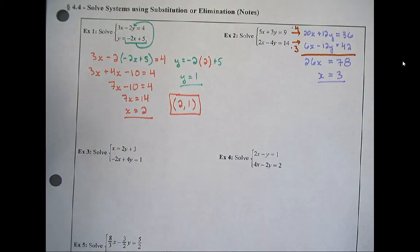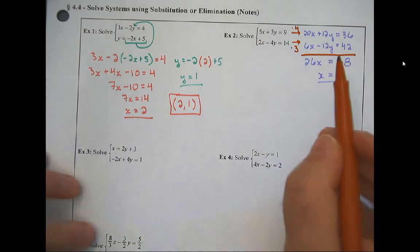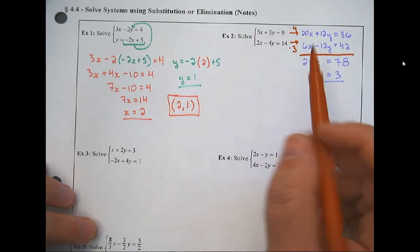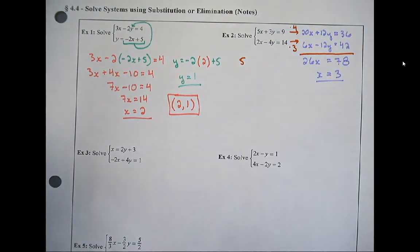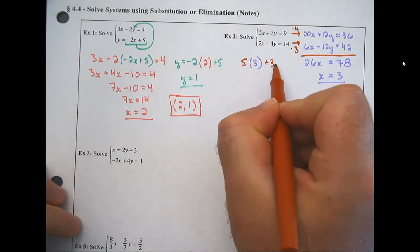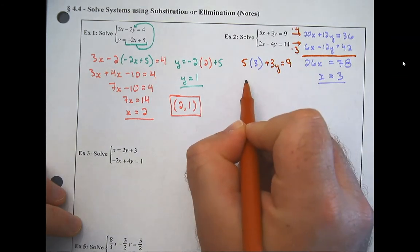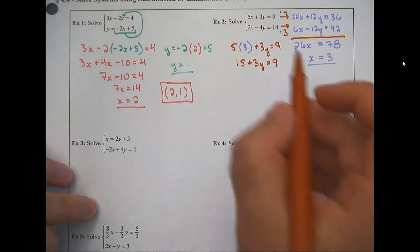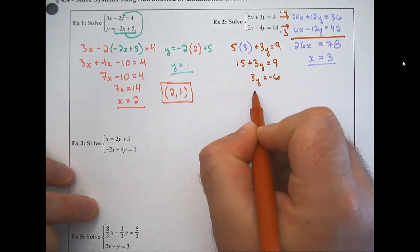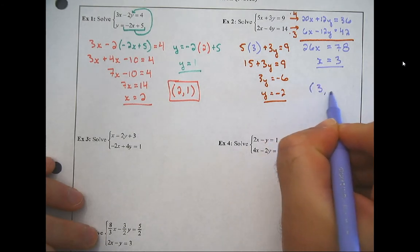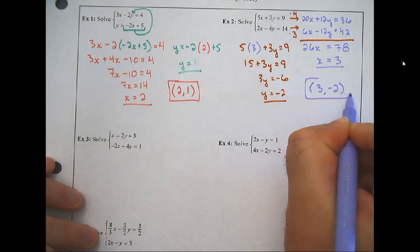I underlined that — didn't box it in because I still have work to do. Now I plug x equals 3 into one of the original equations. Using the first: 5 times 3 is 15, so 15 plus 3y equals 9. Subtracting 15 gives 3y equals negative 6, divide by 3, and y equals negative 2. Now I take those two pieces together and box them in — always alphabetical order, x before y.